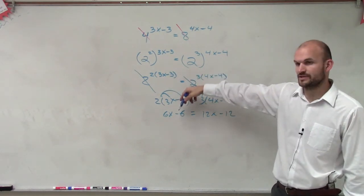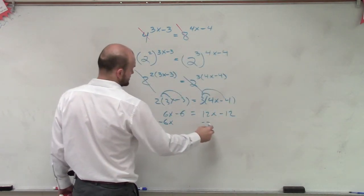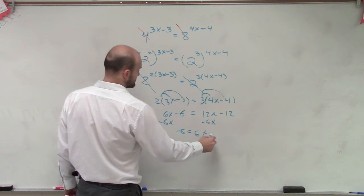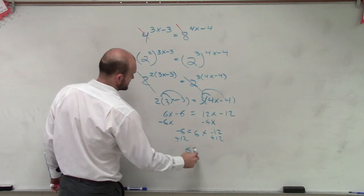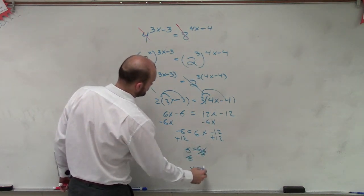Now, I get the x's to the same side, so I subtract 6x. Then I do negative 6 equals 6x minus 12. Add 12, 6 equals 6x. Divide by 6, x equals 1.